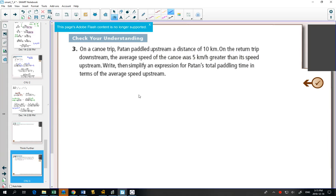On a canoe trip, Patan paddled upstream a distance of 10 kilometers. On the return trip downstream, the average speed of the canoe was 5 kilometers per hour greater than its speed upstream.